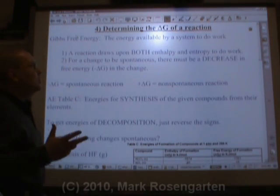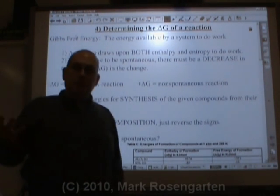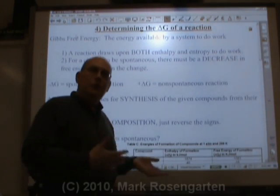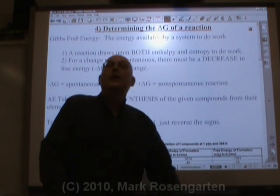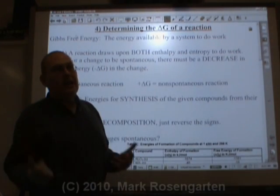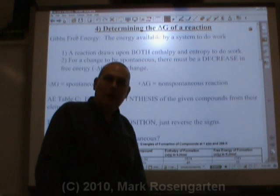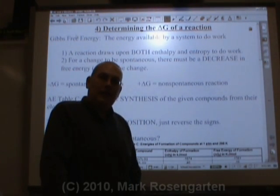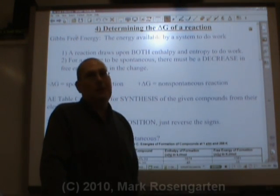Gibbs free energy is the energy that's available by a system to do work. You know when you're mowing the lawn, you're expending energy. Over time, your energy available to do work goes down because you're getting tired. In a chemical reaction, either you can start with less energy available to do work and end up with more — that would be non-spontaneous — or the amount of energy available to do work can go down over time, which is what usually happens. That would be a spontaneous change.